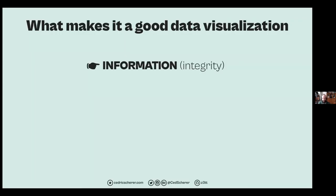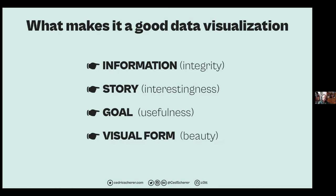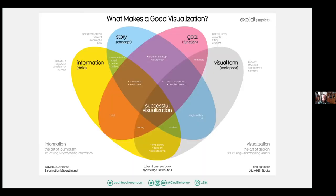We can think about data visualization in different categories. I like this classification: first, it's important that the information is there — the data level and integrity. We should have something to tell — the story and interestingness of the data. Then we want to reach a goal — the usefulness of the visualization. And finally, we take care of the visual form — the beauty or design. There are rules to apply so people can read and interpret the chart, and also find it aesthetically pleasing. These four categories come from David McCandless's 'Information is Beautiful.'